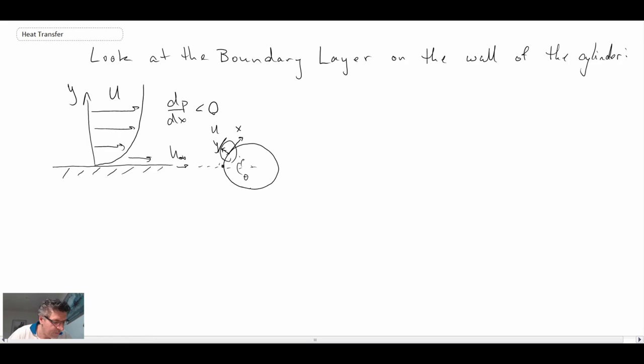Now if we go further along, we'll get to a region. We'll call this region one. This here would be region two. And again, I'm going to draw a section of the wall normal.